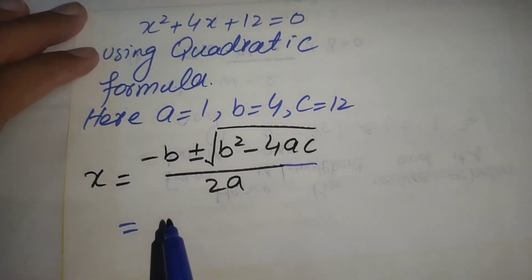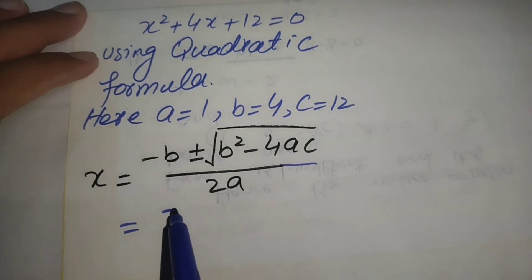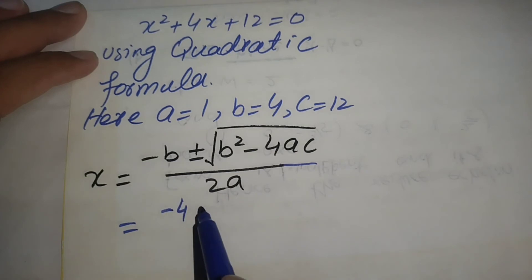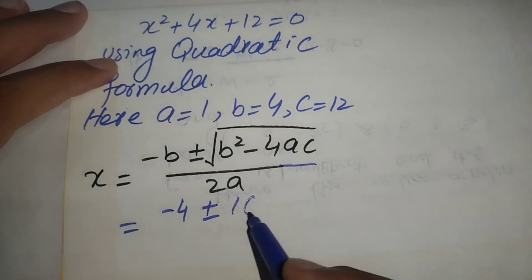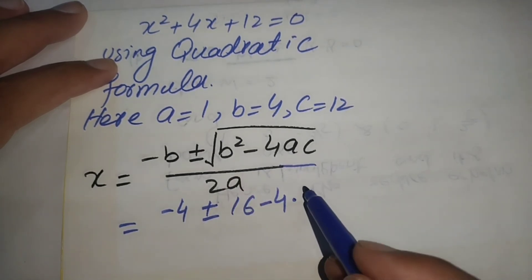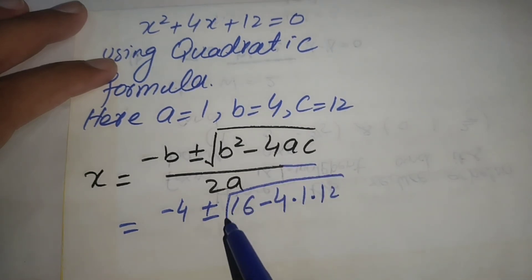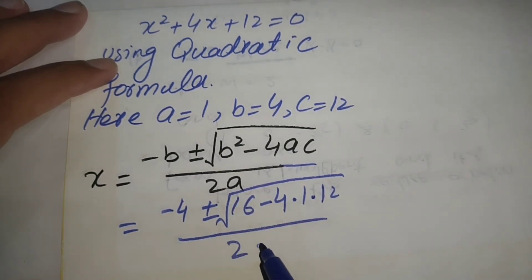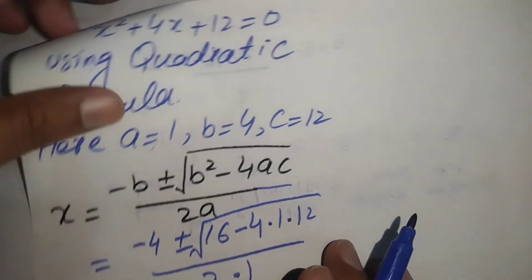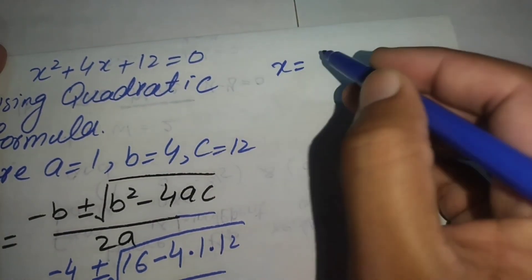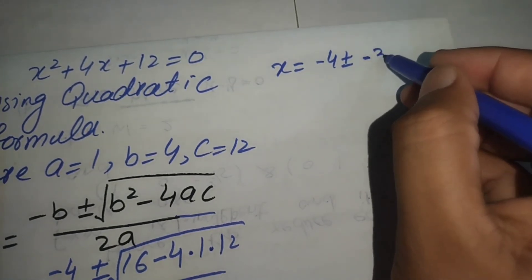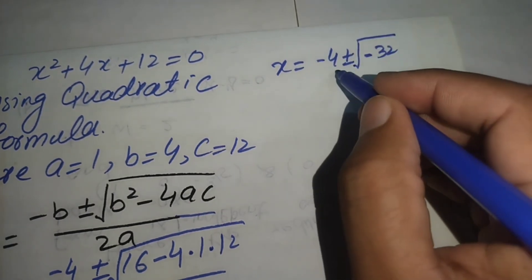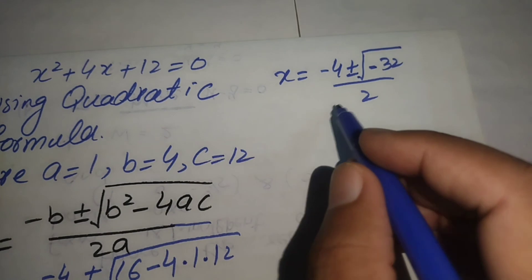Substituting into the quadratic formula: we get −b = −4, then b² = 4² = 16, minus 4 × a × c = 4 × 1 × 12 = 48, so 16 − 48 = −32. The result is x = (−4 ± √−32) / 2.